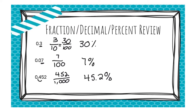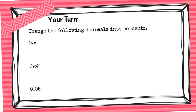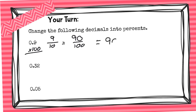What you should be noticing is the decimal is just moving twice because you're multiplying by 100. Now it's your turn — try the following. Let's review: for this one, you should notice this is nine tenths, which is equivalent to 90 one hundredths. Or, if you remembered, you can multiply your decimal by 100 to make it into a percent, which gives you 90 percent. This next one is in the hundredths place, so that would be 32 percent.